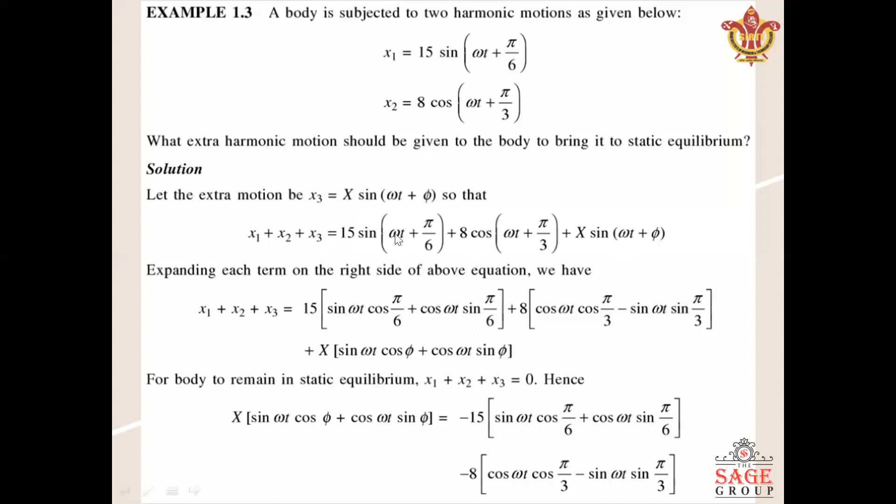Here we apply the formula of sin(a + b) and cos(a + b). As you can see, a is ωt and b is the phase angle. For sin(a + b), we apply the formula sin a cos b + cos a sin b. As well as the formula for cos(a + b): cos a cos b - sin a sin b. So we have already applied these formulas here.